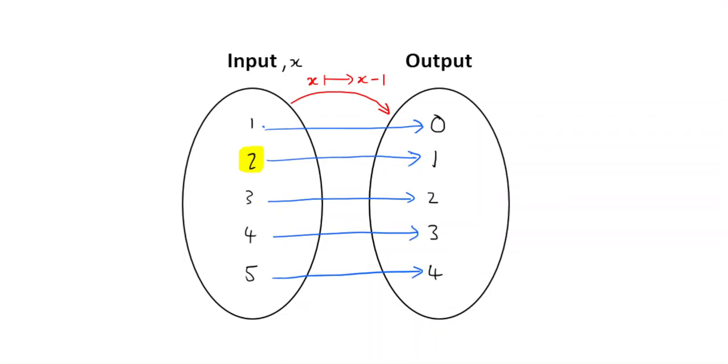Okay, so to clarify again: mapping takes a set of input values, we call those x, and through some rule it maps them onto a set of output values. And in this particular case that rule is x minus 1.